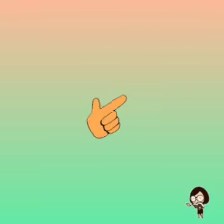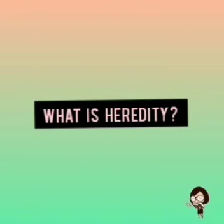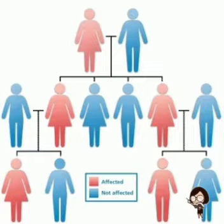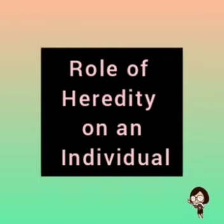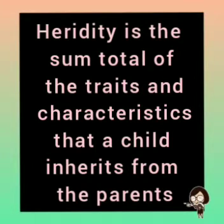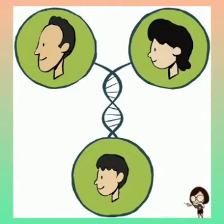Firstly, let's talk about what is heredity. Heredity is the passing on of physical or mental characteristics genetically from one generation to another. Now let's talk about the role of heredity on an individual. Heredity is the sum total of the traits and characteristics that a child inherits from the parents.